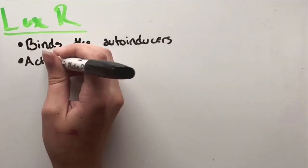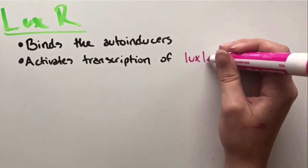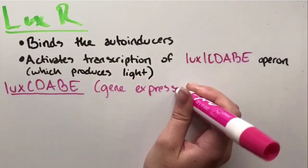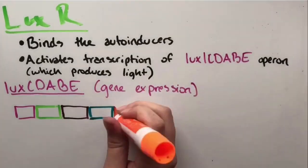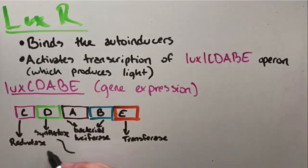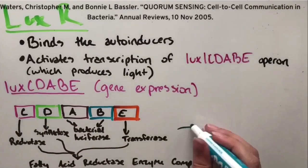LUX-R binds the autoinducer, meaning it receives the signal it carries. Then, it activates the transcription of the LUX-ICDABE operon, meaning it controls the expression of light. That operon initiates a complex process during which luciferase, the light-producing enzyme, is encoded, resulting in bioluminescence when the cell decides that gene should be activated.